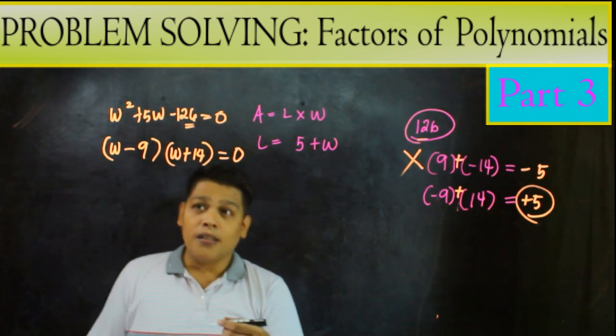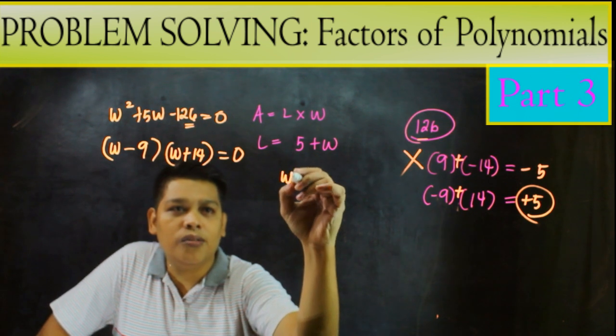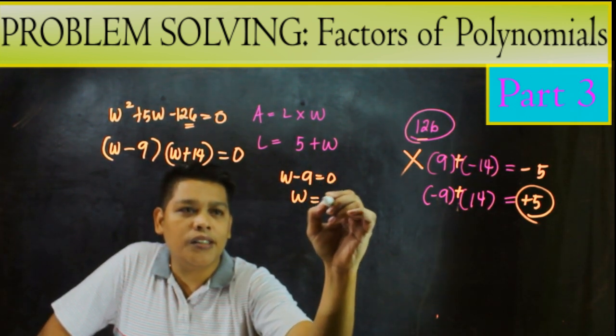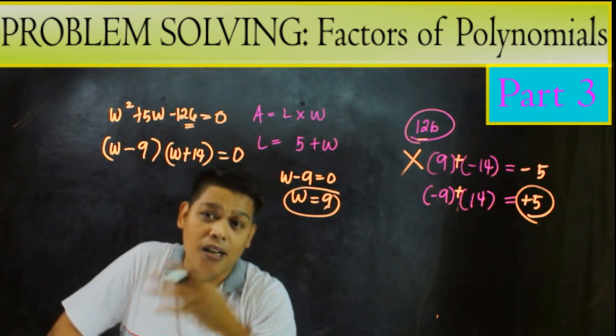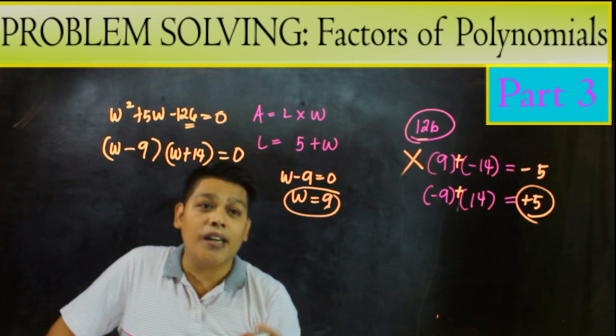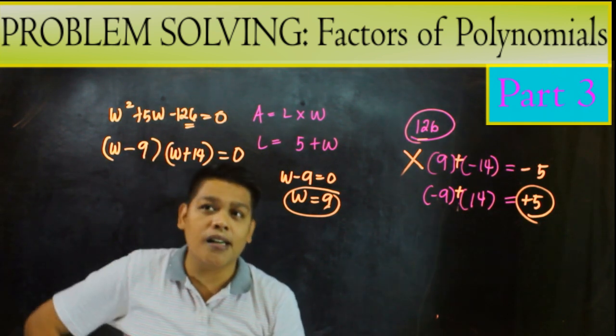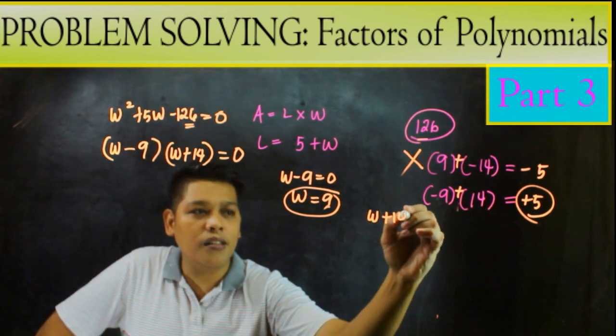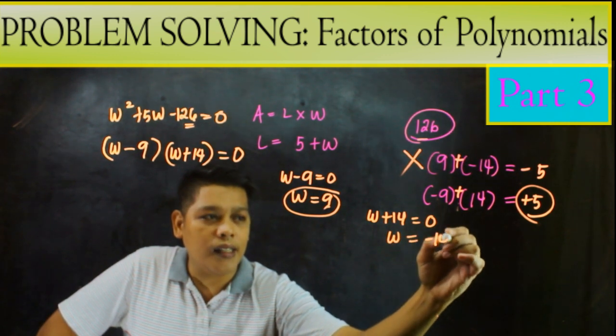Ngayon, 0 property. So ang gagawin natin yan, lalagin natin siya sa 0. So W, minus 9 equals 0. So W equals positive 9. Kapag nag-minus tayo sa kabila at sa kabila. So yan ay positive. Ang nag-plus tayo, positive 9. Ganun din naman sa W, 14 plus 14. So W plus 14 equals 0. So W equals negative 14.